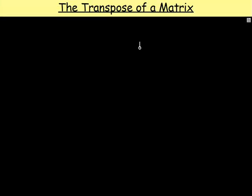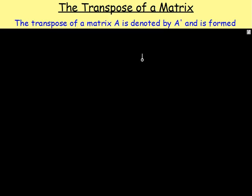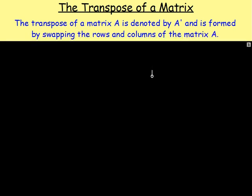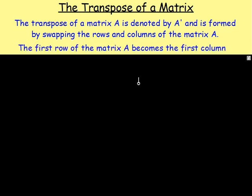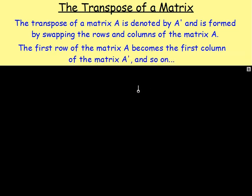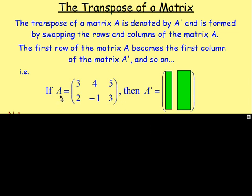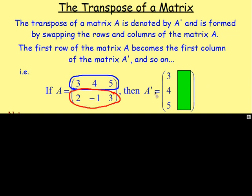The transpose of a matrix. The transpose of matrix A is denoted by A dash, and it is formed by swapping the rows and columns of matrix A. The first row of matrix A becomes the first column of A dash, the second row becomes the second column, the third row becomes the third column, and so on. So here, matrix A is a 2 by 3 matrix. The first row — 3, 4, 5 — becomes the first column running down: 3, 4, 5. The second row — 2, negative 1, 3 — becomes the second column: 2, negative 1, 3. So we have swapped the rows for the columns.